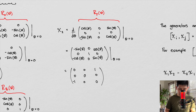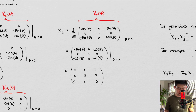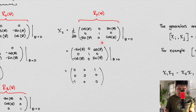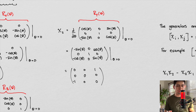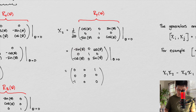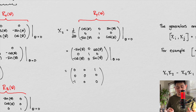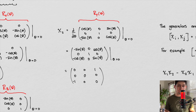We can do the exact same thing for our rotation in our y-plane. This is what our rotation matrix looks like. Again, taking the derivative, we get this. The derivative of cosine is negative sine, and so forth — this is a calculus thing. I'm assuming you know a little bit of calculus and linear algebra. So this is what the derivative looks like, and then we set our parameter equal to zero and we get this generator.